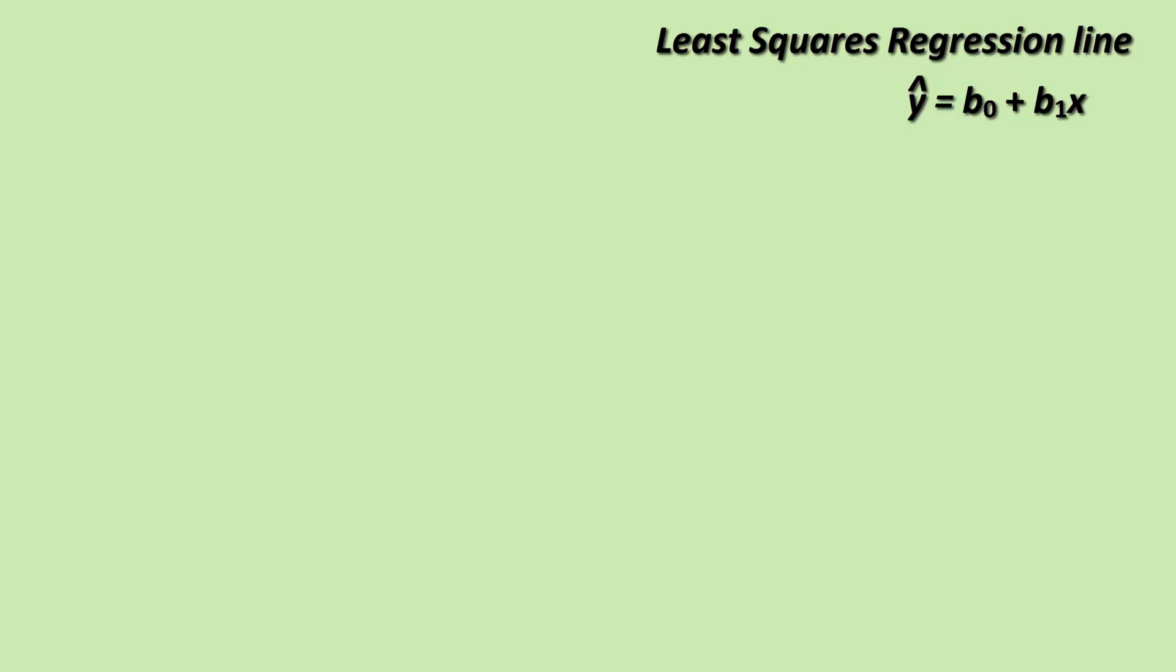There's a simple formula for finding the slope and then finding the y-intercept of the least squares regression line. You'll be provided these formulas on the AP exam. We will need five statistics to calculate the LSR line: the mean and standard deviation of X, the mean and standard deviation of Y, and the correlation coefficient R.